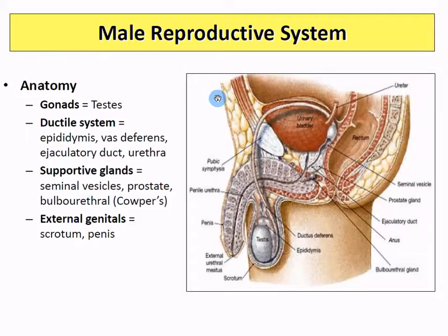So the male anatomy. As we go through the male anatomy, keep in mind there's an equivalent version in the female. When we talk about the gonads being a testis in a male, the ovaries are the gonad in a woman.